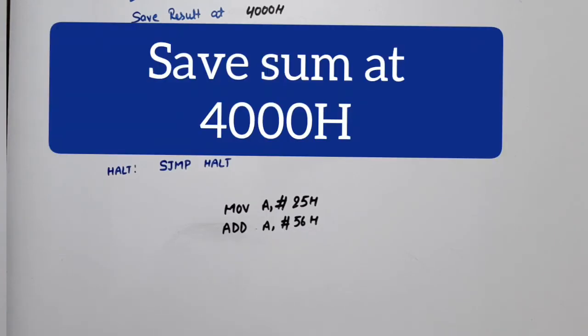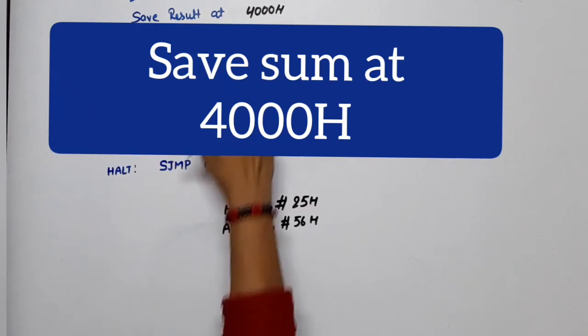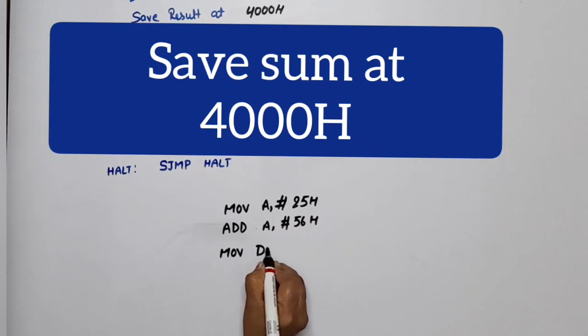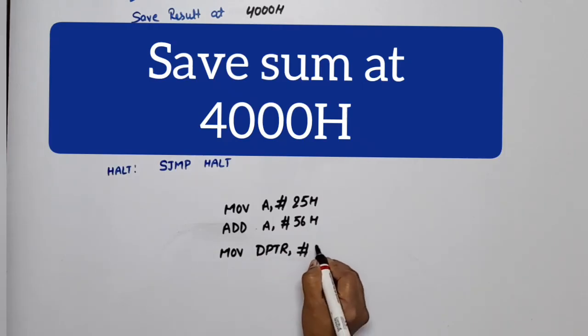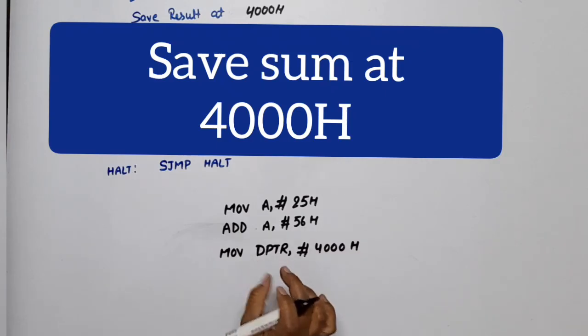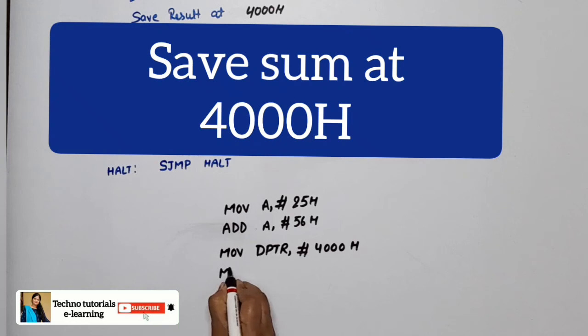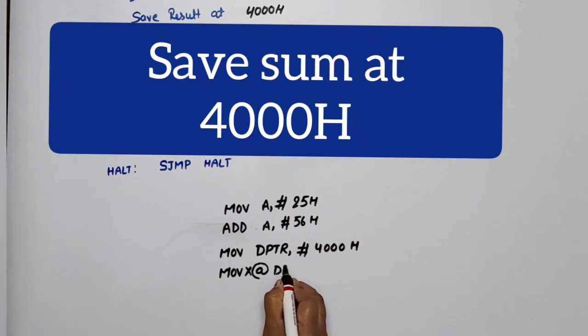Now for the address where we save data - since it's a 16-bit address, we use the data pointer. We write: MOV DPTR, #4000H. This loads the address into the data pointer. Now we save the sum by writing: MOVX @DPTR, A, which saves the accumulator content at the location in DPTR.